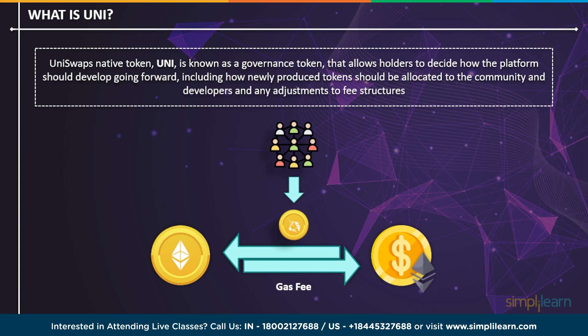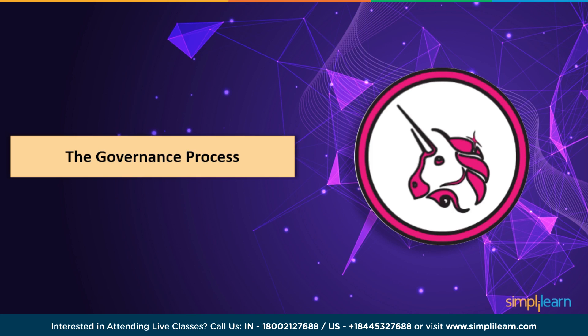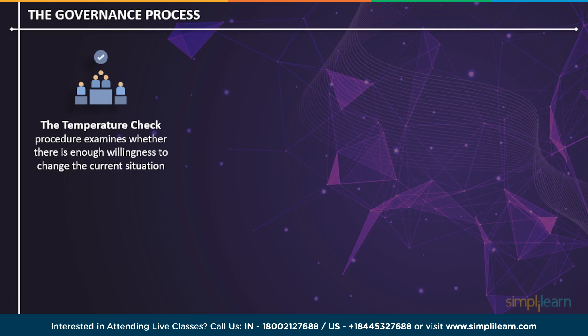This brings the question of what the Uniswap governance process is. The first step is the temperature check procedure, which determines whether there is enough motive to change the current situation. A majority vote with a 25K UNI yes-vote threshold prevails at the end of two days. If the temperature check does not suggest a change from the current situation, the subject is closed on the governance side. If it does suggest changes, it is pushed to the second step — the consensus check.